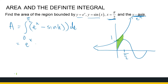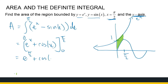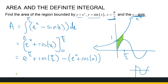The antiderivative is e to the power x plus cos x — because the derivative of cos x is minus sine x — evaluated between pi over 2 and 0. That gives e to the power of pi over 2 plus cos of pi over 2, minus e to the power of 0 plus cos of 0. Cos of pi over 2 is 0, e to the power of 0 is 1, and cos of 0 is 1, so the result is e to the power of pi over 2 minus 2. And that's calculating the area between curves — we'll look at some more complex examples in the next video.